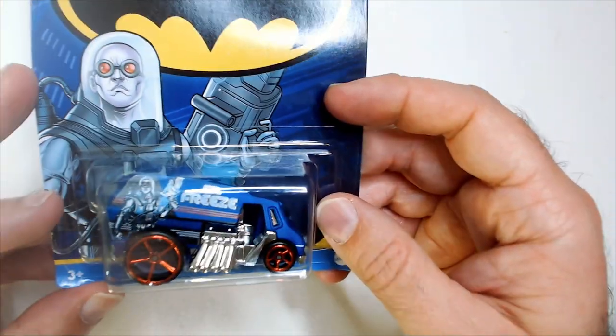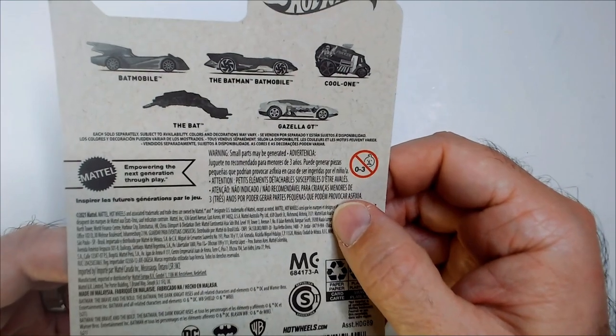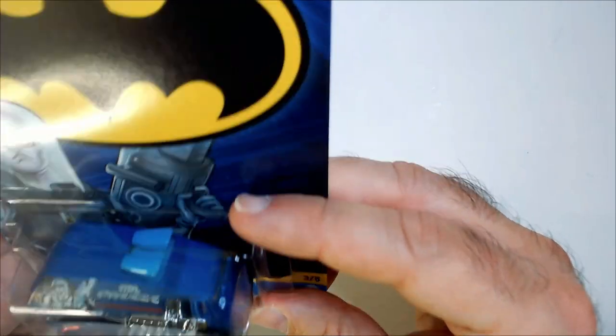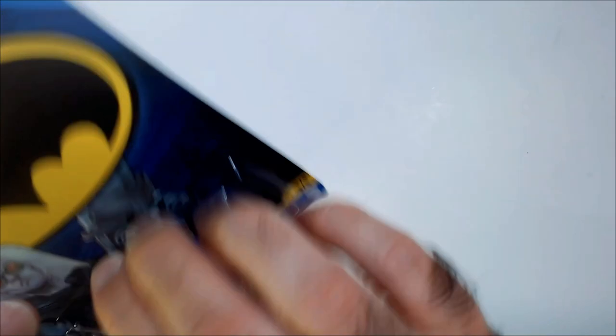Welcome back to the bar. We have a Hot Wheels Cool One, this is Mr. Freeze of course from Batman. Came from the series that's found at Dollar Tree, so we've seen most of these already. This is kind of an assault van. Let's check it out.